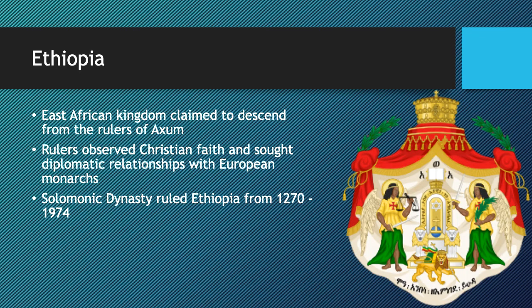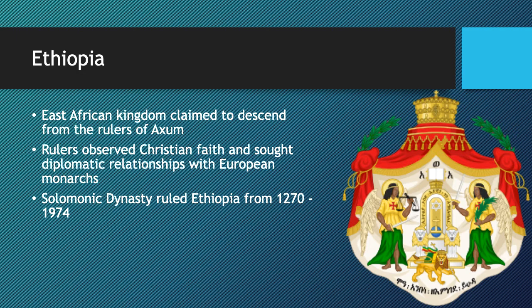In East Africa, another important kingdom is the Kingdom of Axum, located in modern-day Ethiopia. The rulers here observed the Christian faith and sought diplomatic relations with European monarchs. There is a dynasty that ruled from 1270 all the way to 1974 — the same family or lineage, a Christian lineage, ruling Ethiopia. In the 1800s, the Italians tried to conquer Ethiopia, and the Ethiopian kings appealed to other Europeans as fellow Christians to come to their aid, and they did. Ethiopia, during the age of imperialism, is one of two African countries not conquered by Europeans.